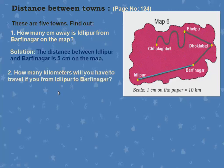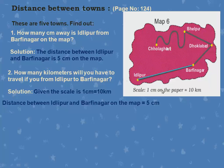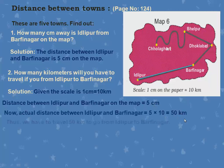Now, how many kilometers will you have to travel from Idlipur to Barfinagar? Given: scale is 1 centimeter equals 10 kilometers, and the measured distance is 5 centimeters. So 5 × 10 = 50 kilometers. We have to travel 50 kilometers to go from Idlipur to Barfinagar.